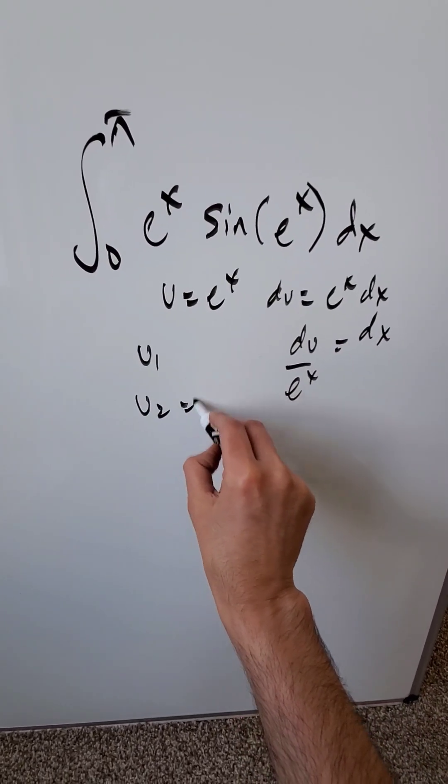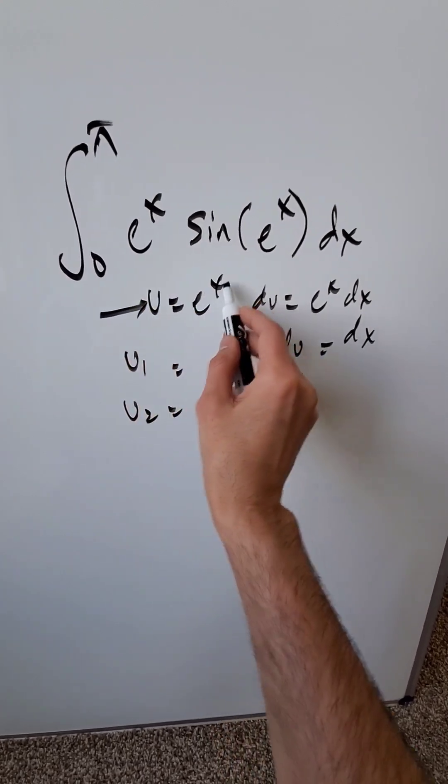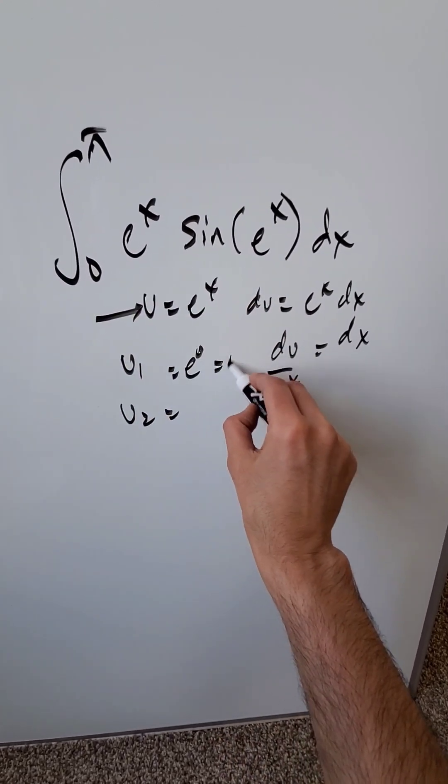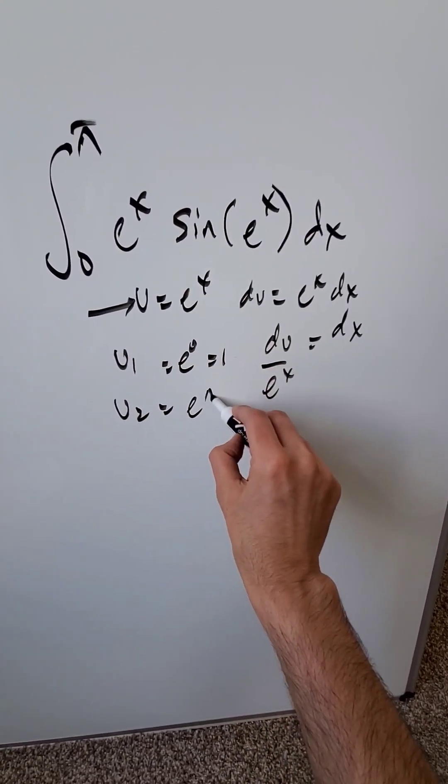You have to find new limits using this substitution. At the lower limit, I'll have e to the 0, which equals 1. At the upper limit, I'll have e to the pi.